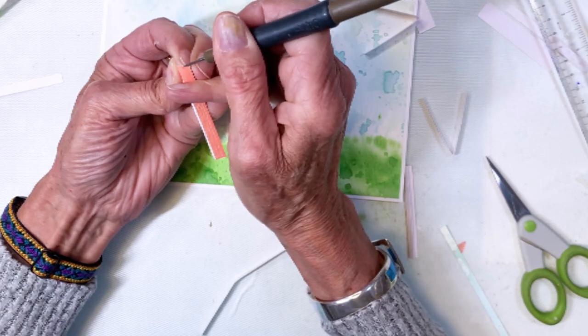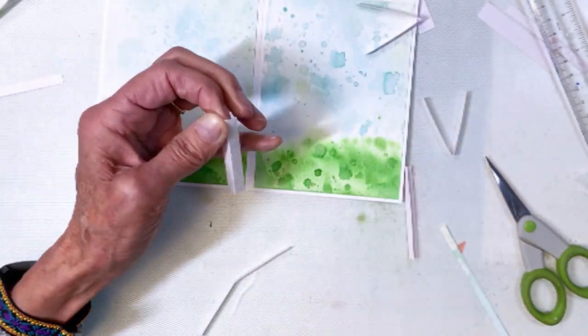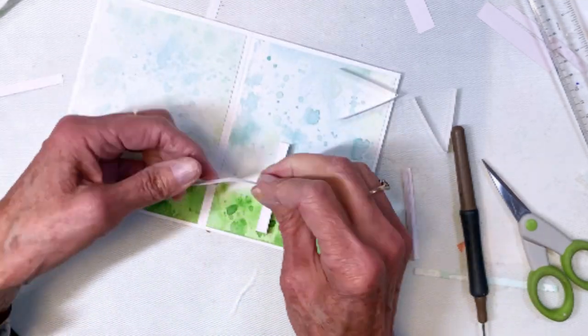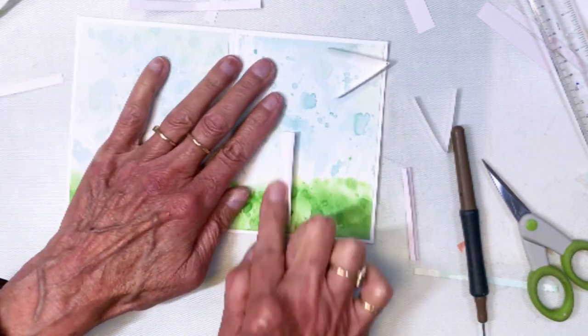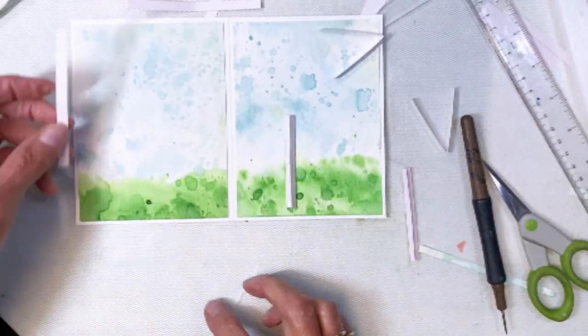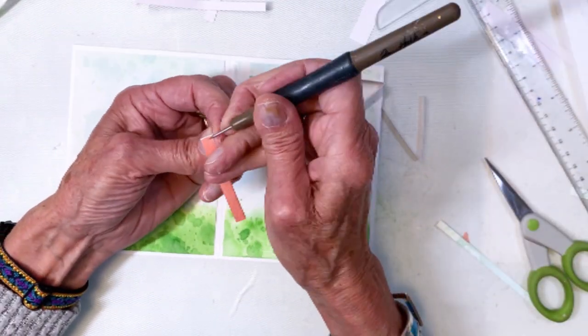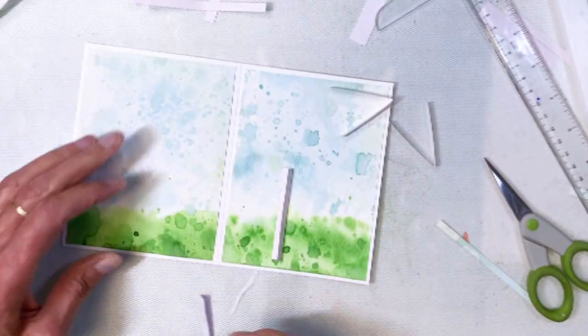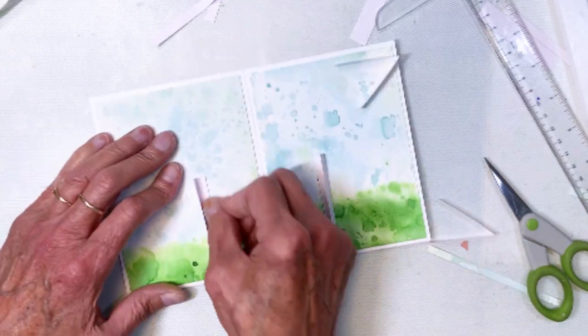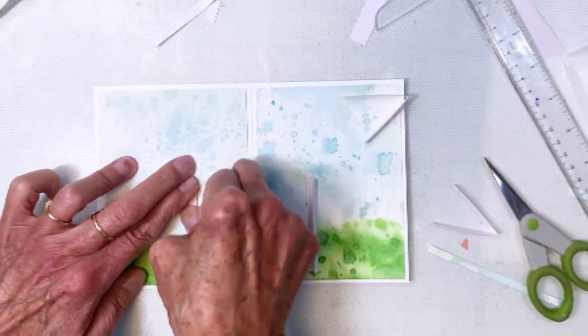So again there's that red tape. So I'll go ahead and pull the backing off there and then we'll go ahead and adhere it to the card base and you can see I kind of double measured there to make sure it was going to fit. Use my bone folder to make sure it was pressed down well. So then we'll go ahead and put the other one over there to the left hand side. Sorry my head got in the way. I needed to make sure it was straight.